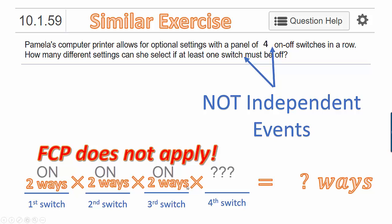But on the other hand, if any of the others were already off, it's possible that the fourth switch could be on. In other words, the fourth switch result depends on the previous results. So these are not independent events — we can't say, without knowing what the previous results were, how many possibilities we have for the fourth switch.